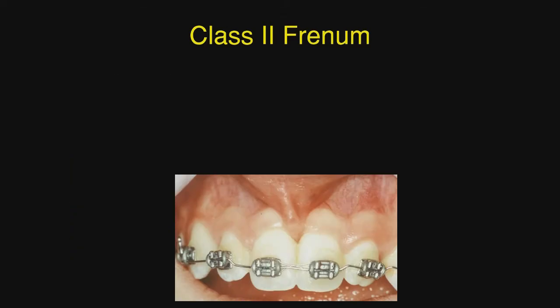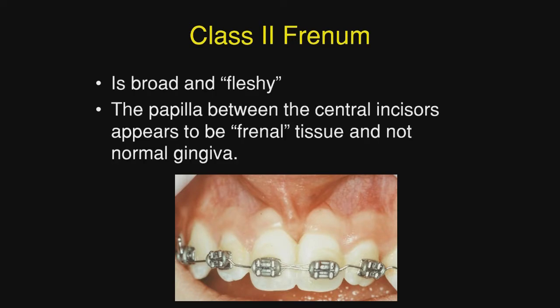A class 2 frenum, on the other hand, is also broad and fleshy, but the papilla between the central incisors appears to be frenal tissue and not normal gingiva, as we note here.